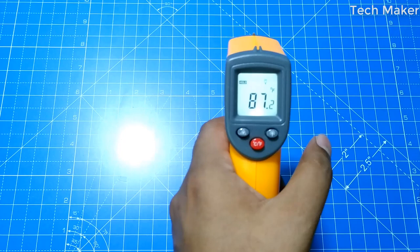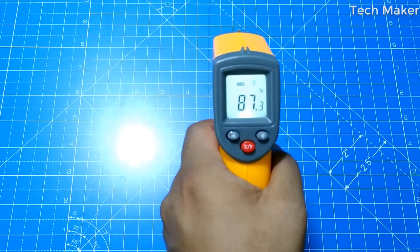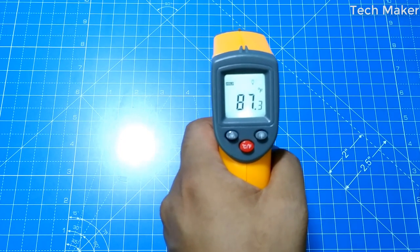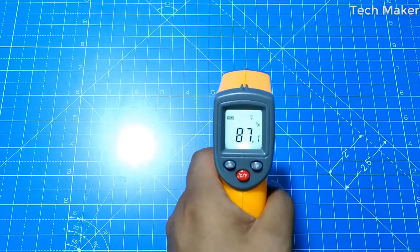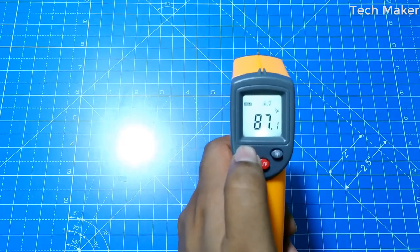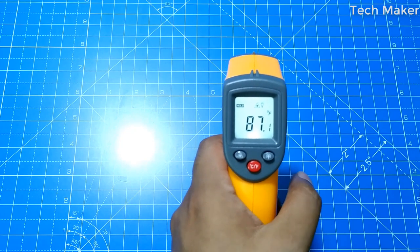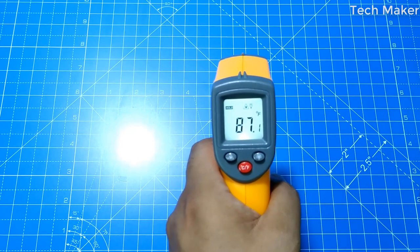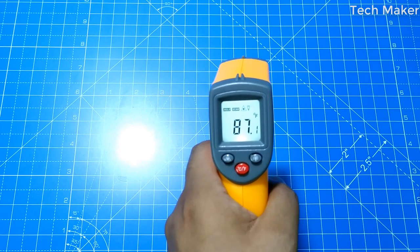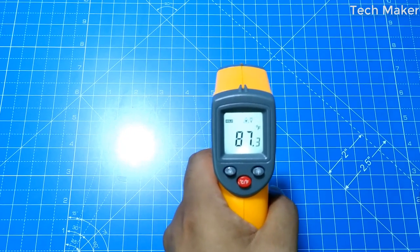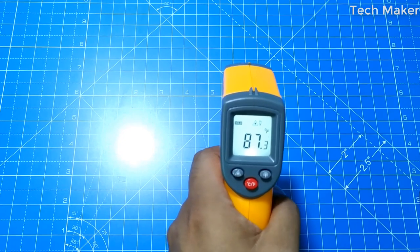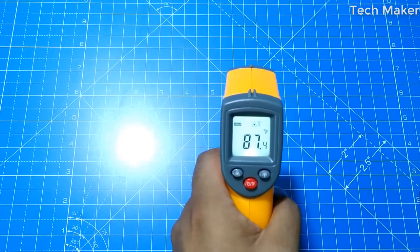Now the laser pointer is off. So when you click on the trigger, it doesn't turn on the laser. And when you click on the laser button, it will be turned on. This laser will be used to aim the target to read the data, so that we can accurately point to the target.